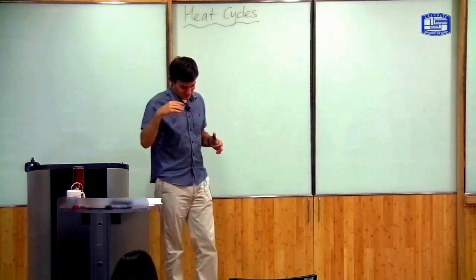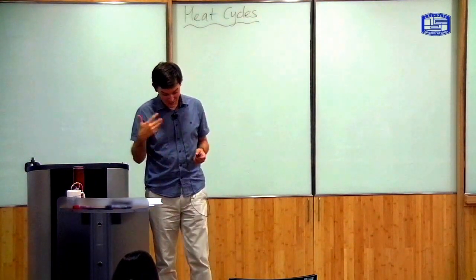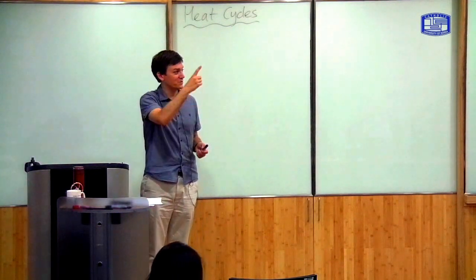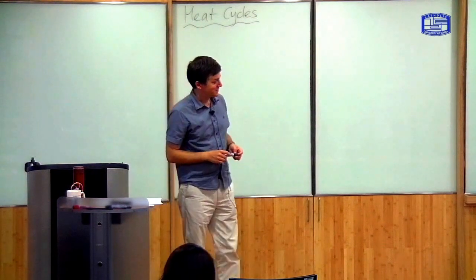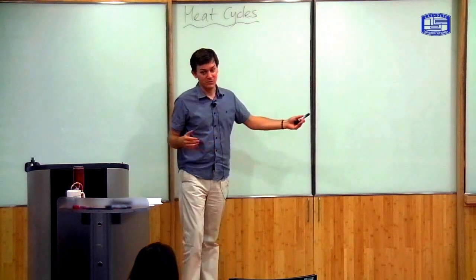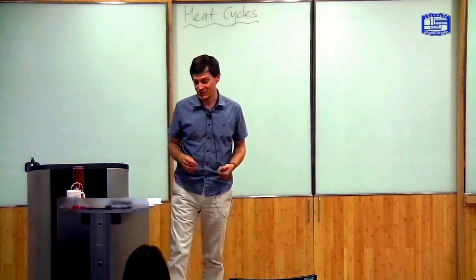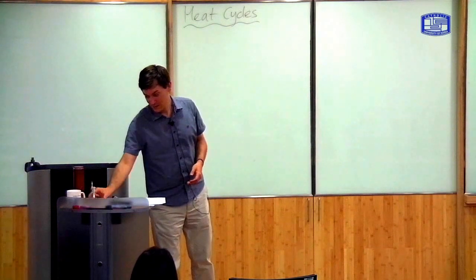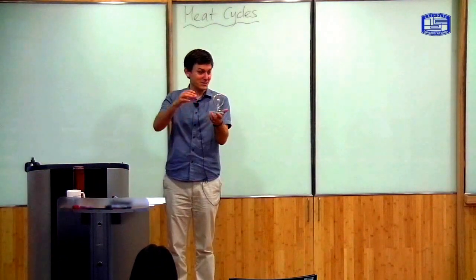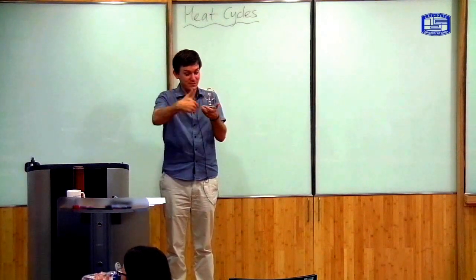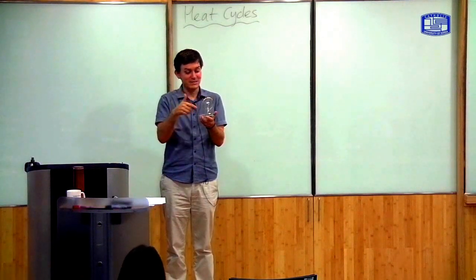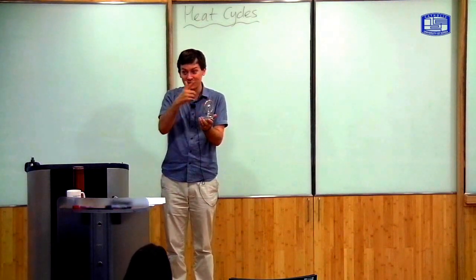Heat cycles describe the processes whereby you can change the state of a thermodynamic system in a cycle. So that means you go round and round in the same changes of state. And by doing this, you can do something useful — you can produce work. This is a Stirling engine, shown in the first lecture. It's an example of a heat cycle: the system goes round and round and is able to generate some work.